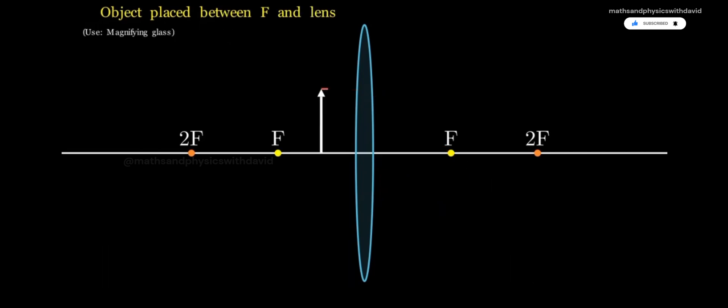Case 5, Object Between F and the Lens. Draw one ray parallel to the principal axis. After the lens, it bends outward as if it came from the focus. Next, draw another ray through the center of the lens. It goes undeviated.